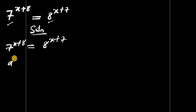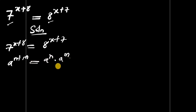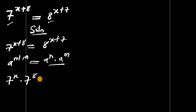We use the identity: a to the power of n plus m equals a to the power of n times a to the power of m. Applying this identity here, we get 7 to the power of x times 7 to the power of 8 equals 8 to the power of x times 8 to the power of 7.